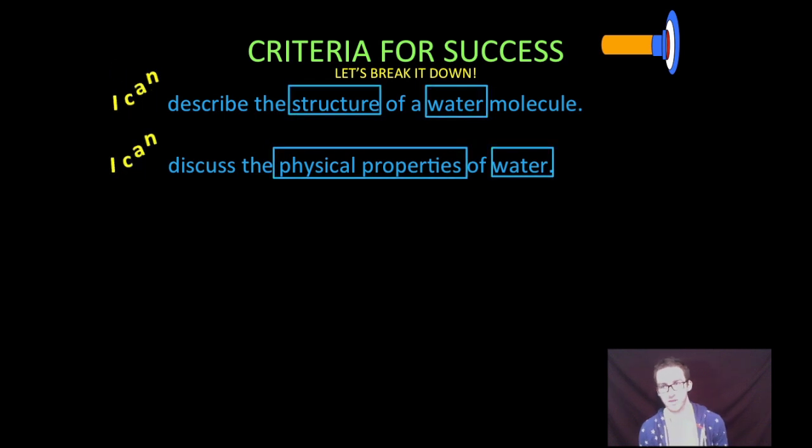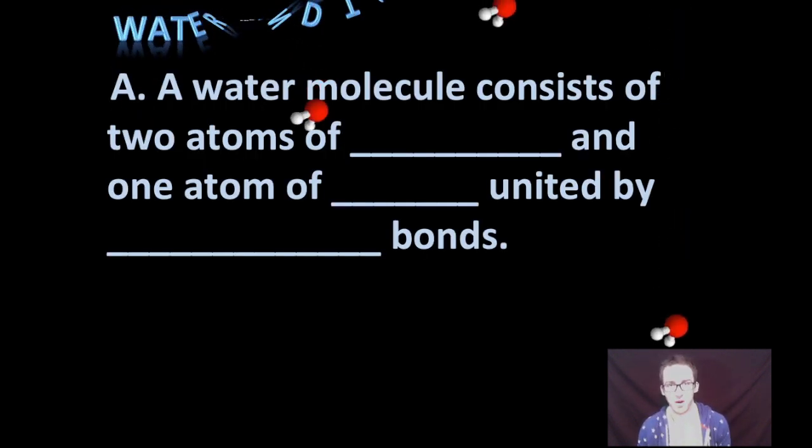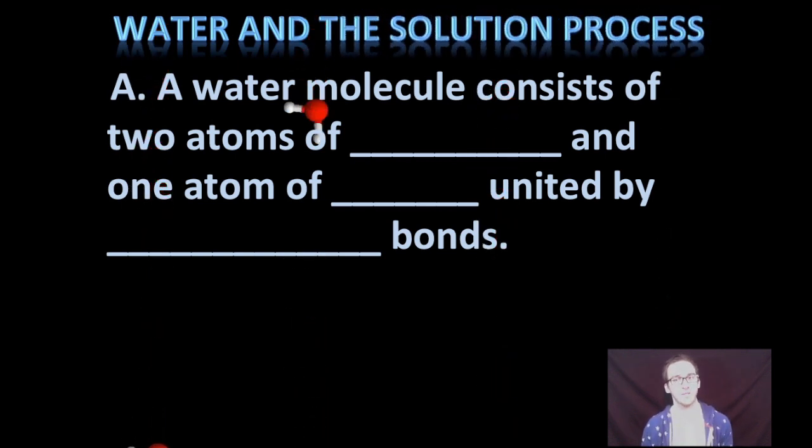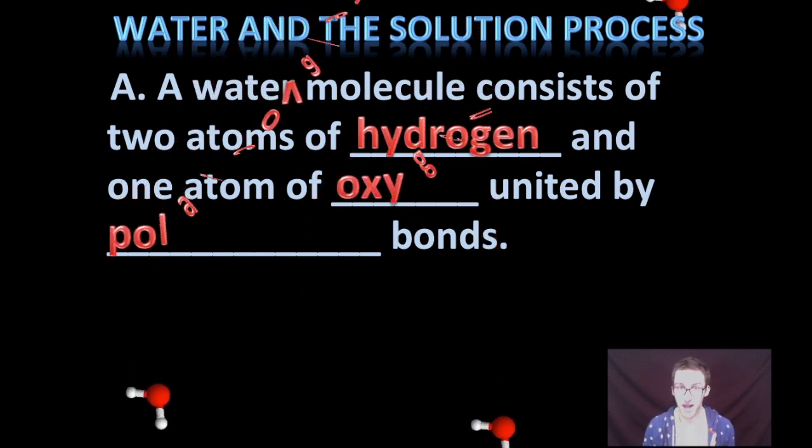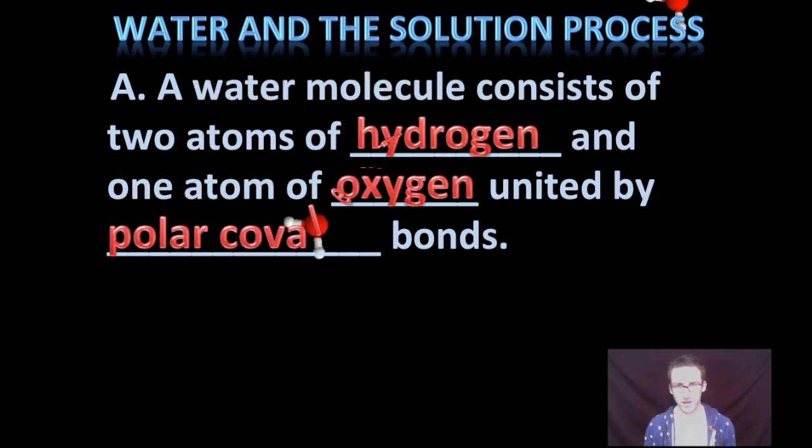So how does its structure relate to some of the unique things that we observe about water? Alright, so first, a water molecule consists of two atoms of hydrogen and one atom of oxygen, united by polar covalent bonds.